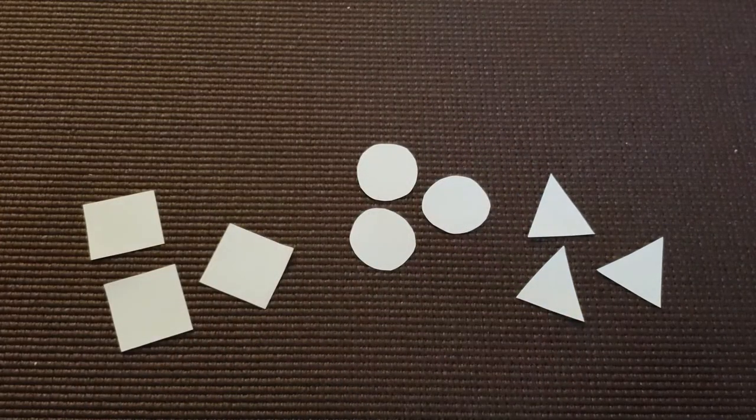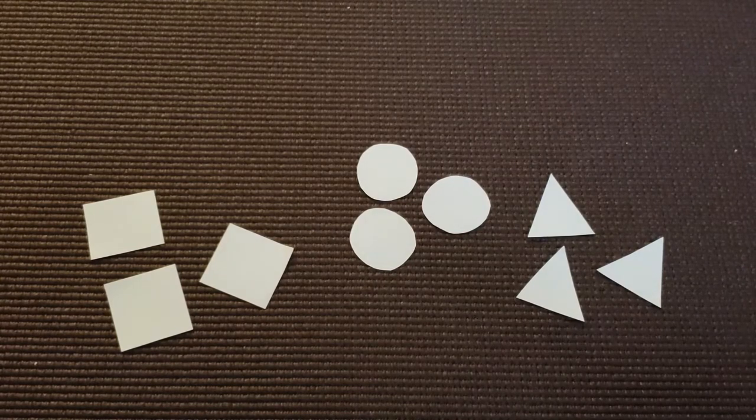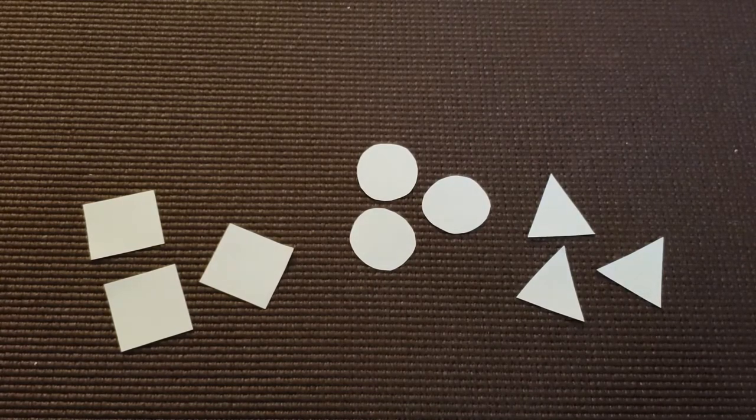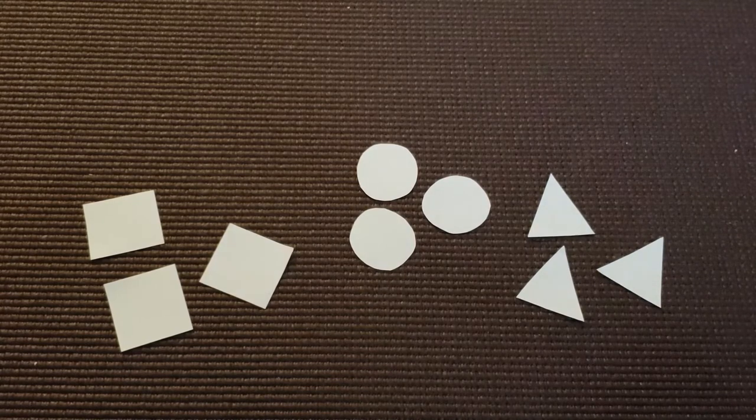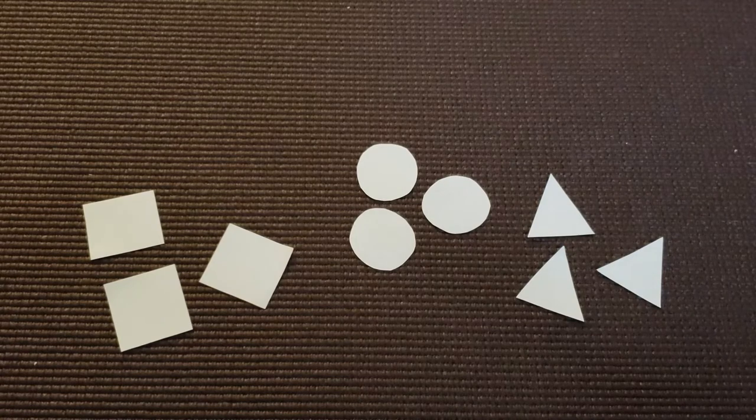And you can do this with any kinds of shapes that the child may be working with. This activity helps the child deepen their understanding of shapes, as well as sorting, and also improves their critical thinking skills.